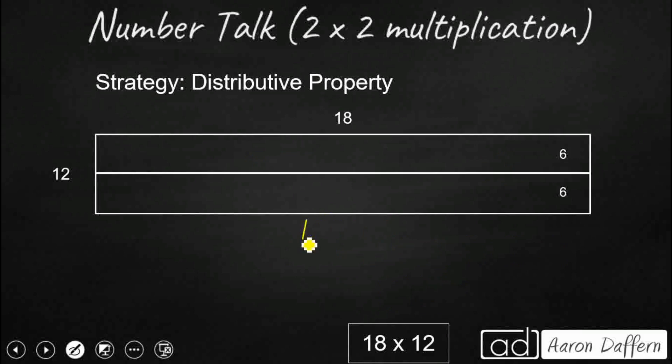Now we could keep our 18 together. And we could just take our 12, cut it in half into 6 and 6. So we'll do 18 times, let's do 6 plus 6. We're going to distribute that 18 out to both of those addends to get our partial products. So really we're doing an 18 times 6.